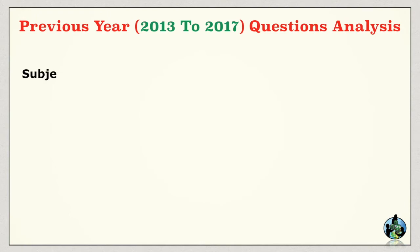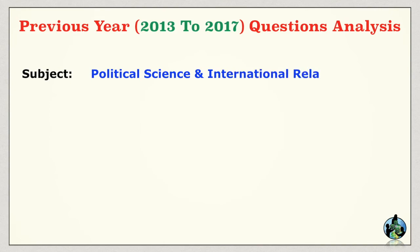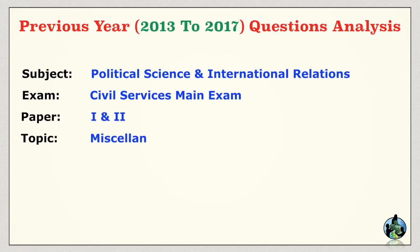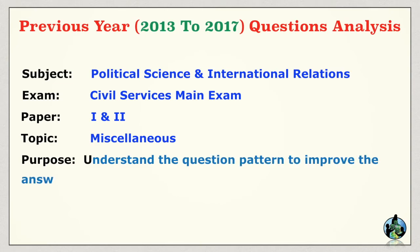This covers the Optional Subject Political Science and International Relations for the Civil Services Main Exam, Paper 1 and 2, under the topic of Miscellaneous. The purpose is to understand the question pattern to improve answer writing skills. Certain questions have been kept under the miscellaneous section — not because they are out of syllabus, but because they are from the syllabus yet not directly from one specific topic.